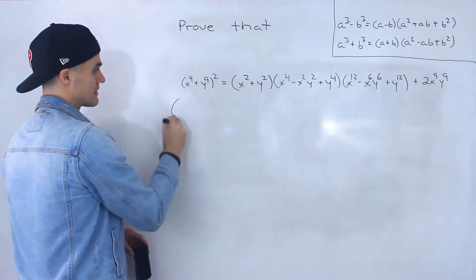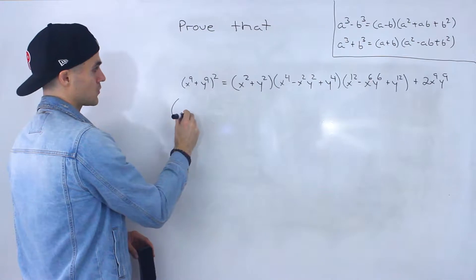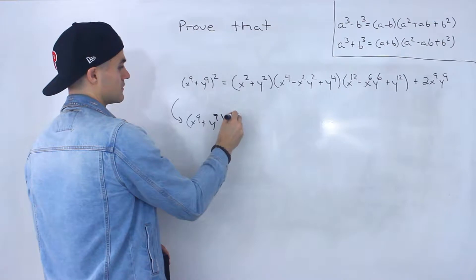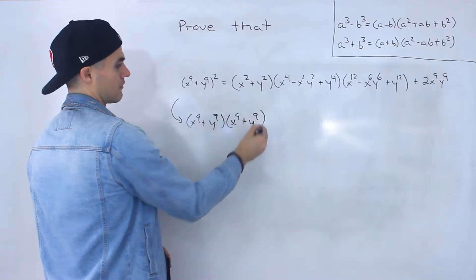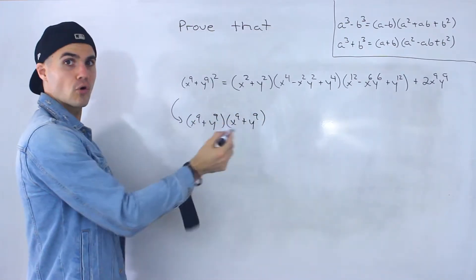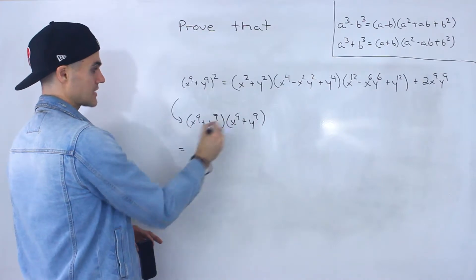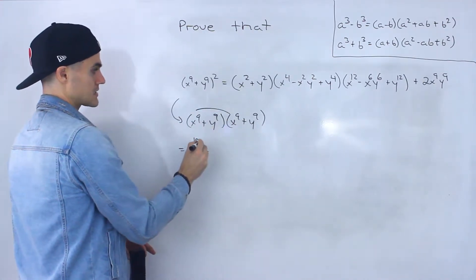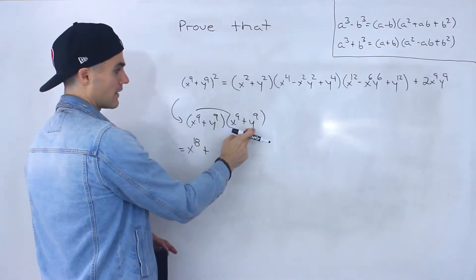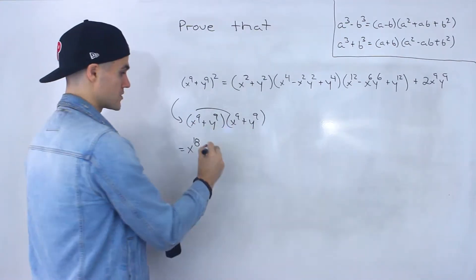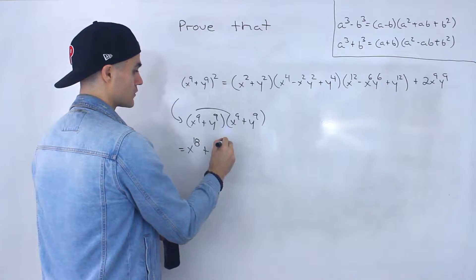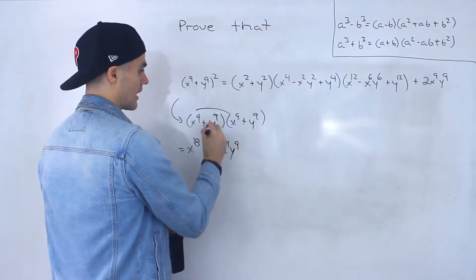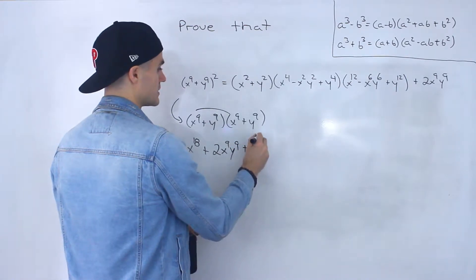So if I take this left side — x to the 9 plus y to the 9, squared — the first thing I'm going to do is write two brackets and then foil everything out. So x to the 9 times x to the 9 is x to the 18, plus x to the 9 times y to the 9. Notice that there's going to be two of them, so when we add them we end up with 2x to the 9, y to the 9 — they're going to be like terms. And then y to the 9 times y to the 9 is y to the 18.